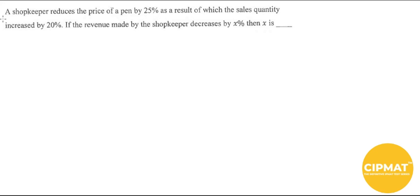This question says a shopkeeper reduces the price of a pen by 25%, and as a result, the sales quantity increased by 20%. That's very natural according to basic economics. Now if the revenue made by the shopkeeper decreases by x percent, then what is x?